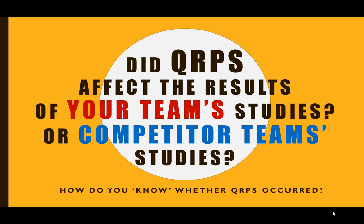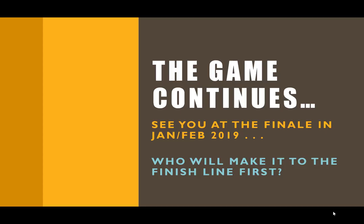So, just a bit of a primer — go back and look through those three papers, and then try to figure out: did QRPs affect the results of your team's studies? Yes or no? If so, which ones? Or did they affect your competitors' team's studies? Take a look at the meta-analysis and overall results and see whether you might be able to surmise whether they did, and if so, how do you know — or can you know, or is it an impossible situation? Apply that back to the results, and then in January or February we'll come back together and come to the finish line on this clinical trial simulation. I'm truly looking forward to that. See you at the games in 2019. Thanks so much, class. Take care. Bye.